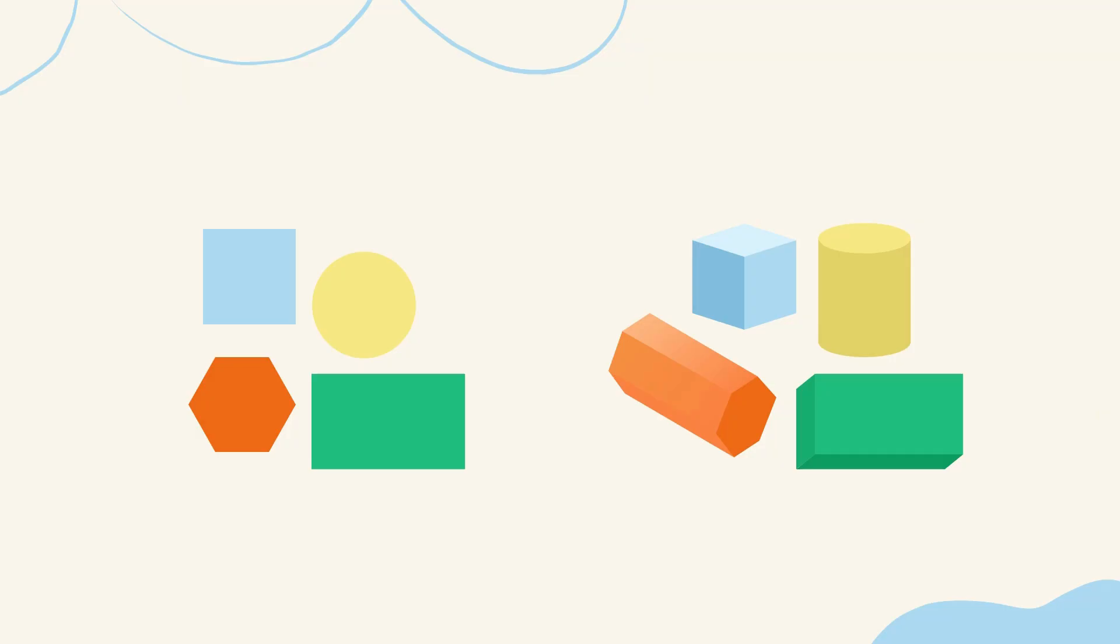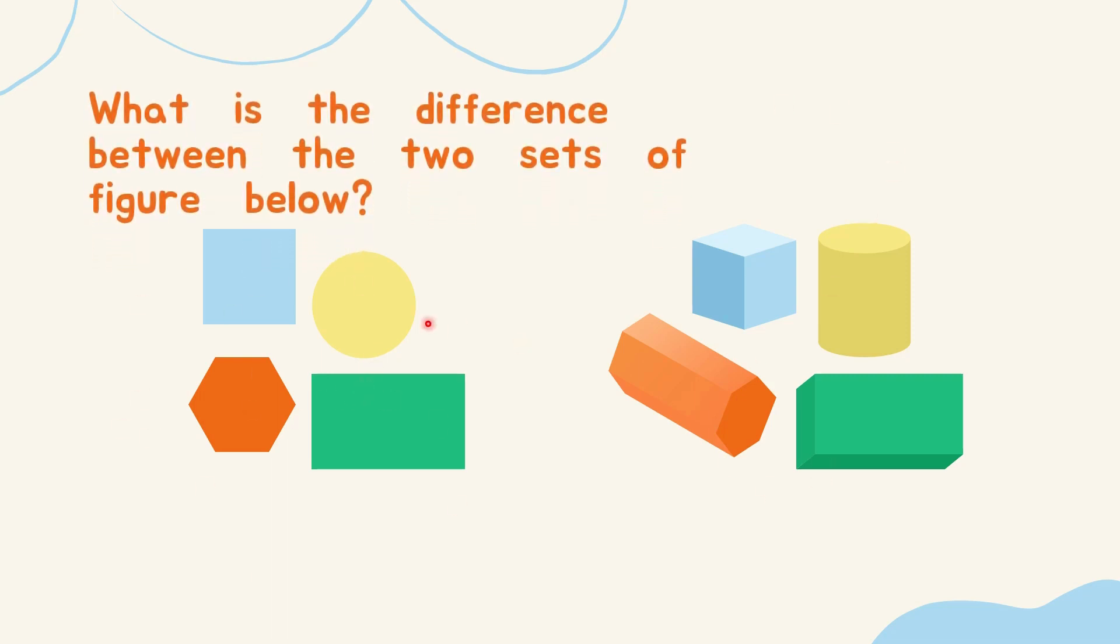We have here two sets of figures, set A and set B. What is the difference between the two sets of figures below? For set A, obviously, they are two-dimensional figures or plane figures. And for set B, they are 3D or solid figures.